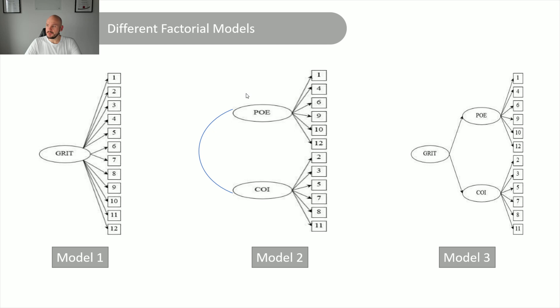So this is what the instrument measures. It measures two factors, perseverance and interest, made up of items 1, 4, 6, 9, 10, and 12, and 2, 3, 5, 7, and 8. So this is what the measure says.